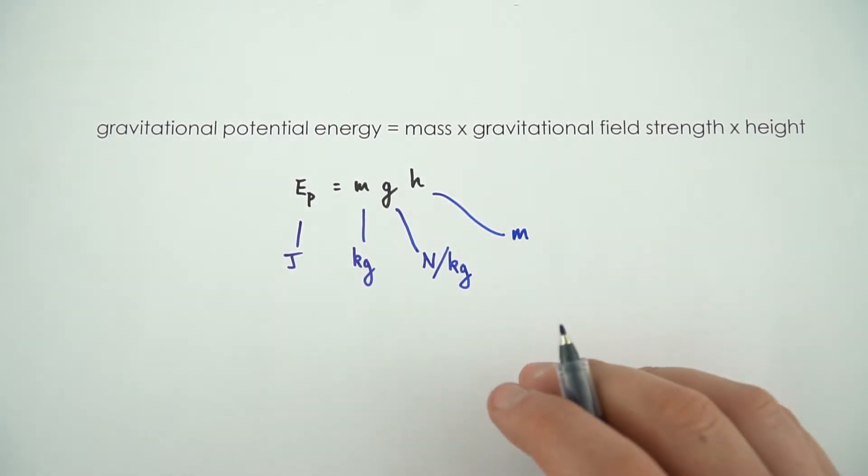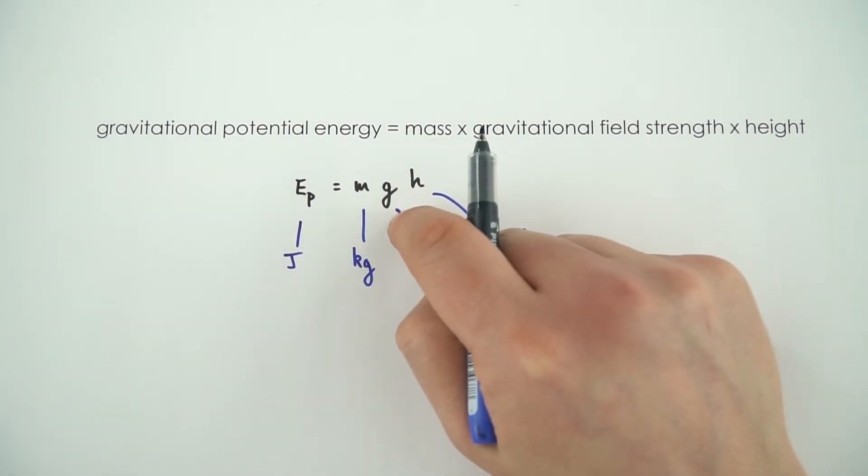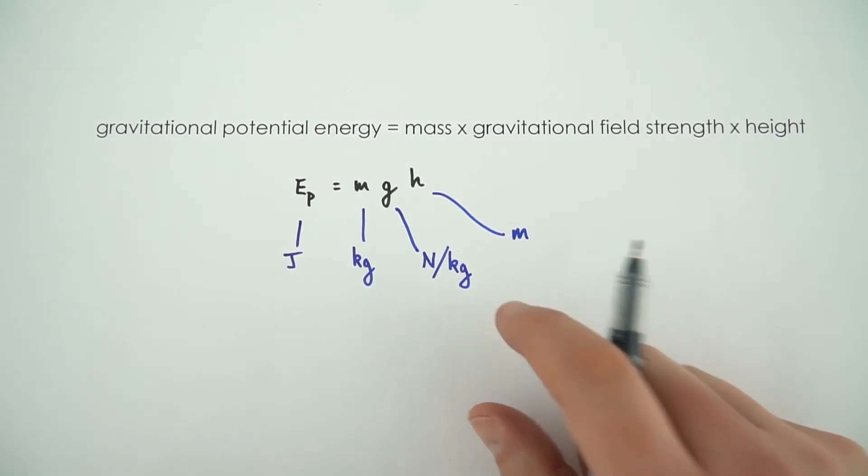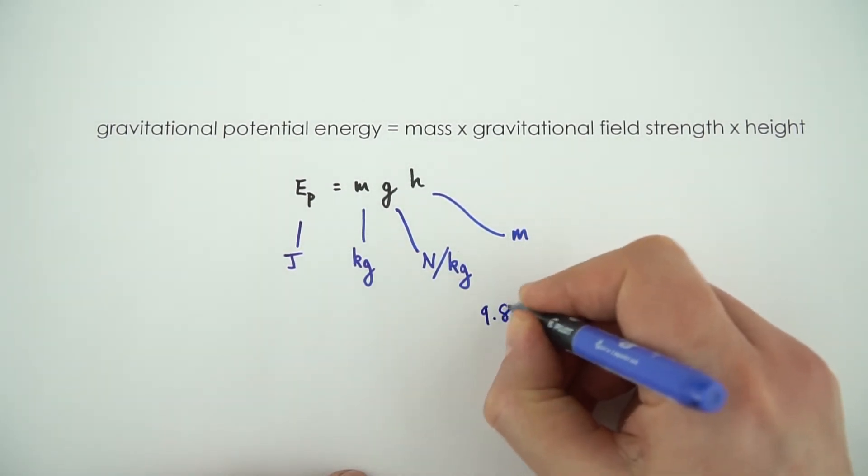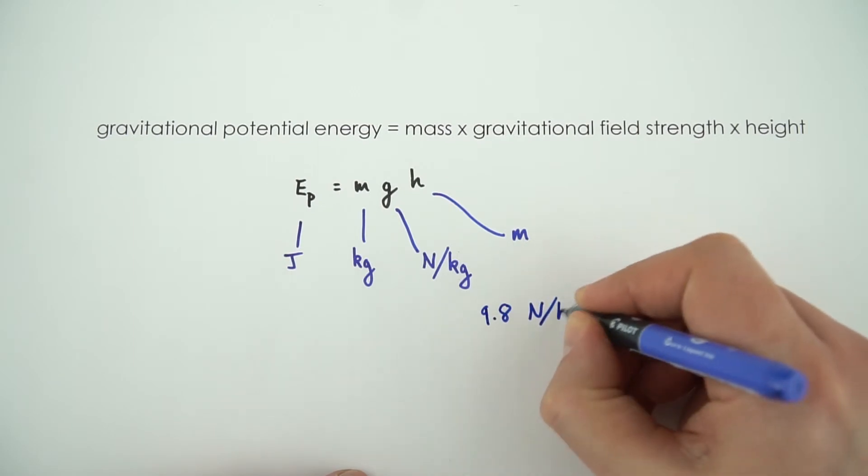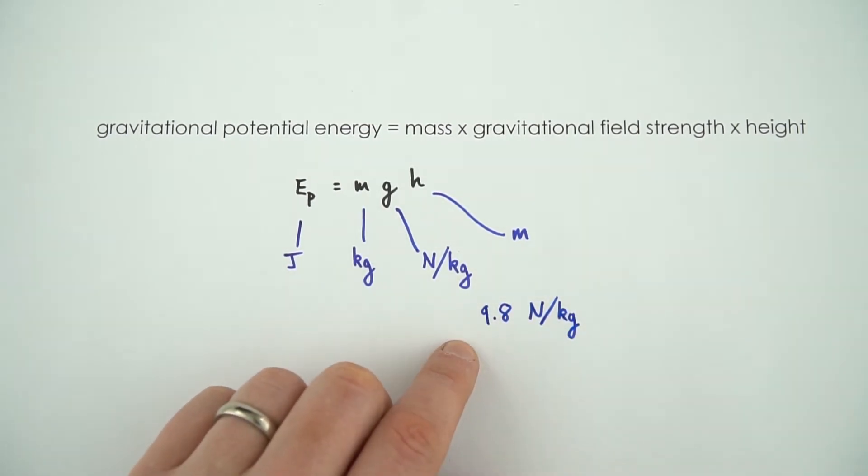Now when it comes to doing questions, you'll often be given the value of g in your question. Often it's sometimes rounded up to about 10, sometimes it's also given as 9.8 newtons per kilogram, provided we're doing questions on the Earth.